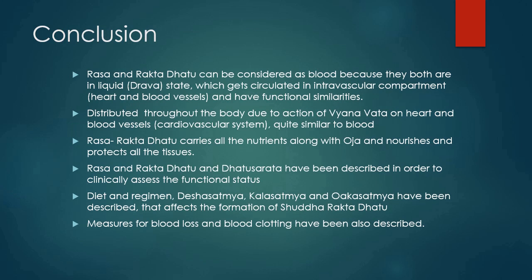In conclusion, Rasa and Rakta Dhatu can be considered as blood because both are in liquid state, circulate in the intravascular compartment, and have functional similarities. Distributed throughout the body due to the action of Vyanvata on heart and blood vessels, Rasa-Rakta Dhatu carries all nutrients along with Oja and nourishes and protects all tissues. Measures for blood loss and blood clotting have also been described, showing that very detailed physiology of blood and its applied aspects have been described by the ancient Ayurvedic scholars.